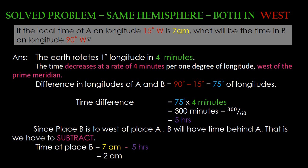The next step is to find out the time difference. For 1 degree longitude the earth takes 4 minutes, so for 75 degrees of longitude we need to multiply 75 into 4, that is 300 minutes. We need to convert the minutes into hours: 300 divided by 60 is 5 hours.